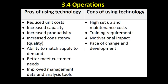Overall, the pros of using technology: we should get lower unit costs because we can produce much more and buy materials in bulk. We should be able to increase capacity and productivity — labour productivity should rise if we have fewer workers and more machinery. Consistency of product should improve, which is a measure of quality. We'd be better able to match supply to demand, meet customer needs, and we'll have improved management data analysis tools to review production information and drive improvements.